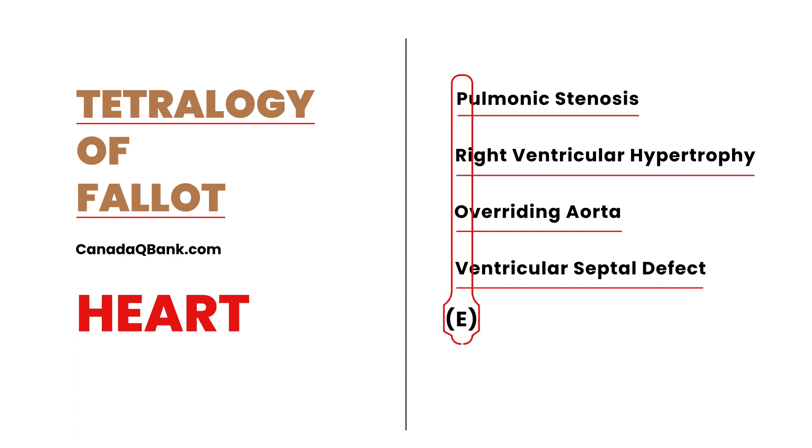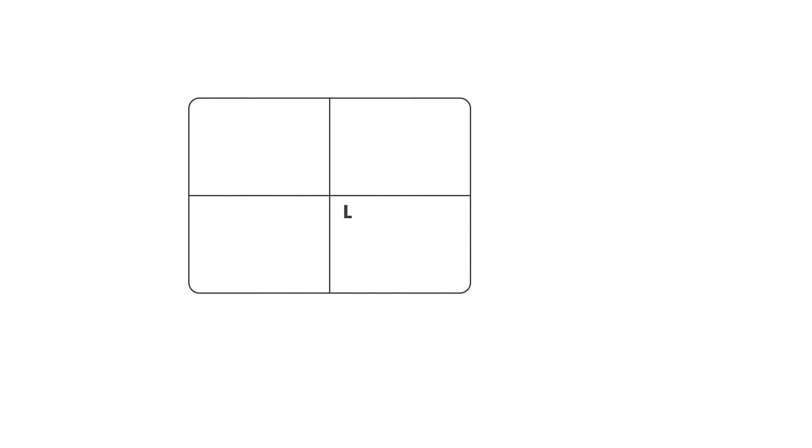This may seem a bit overwhelming, but I'm going to draw a diagram and hopefully explain this as clearly as possible. So we've got our heart here with the four chambers. Let's label this as the left ventricle, this is the right ventricle, this is the right atrium, and this is the left atrium.